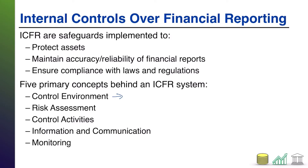First up, you have the control environment. The control environment is also known as the tone at the top. Essentially, this is — in general — what is the feeling in the company around safeguards? Are they viewed as vital and important to the company, or are they viewed as a nuisance that management just wishes they could do away with? Do they place importance on protecting the assets, or are they dismissive? What is that tone? That's your control environment.